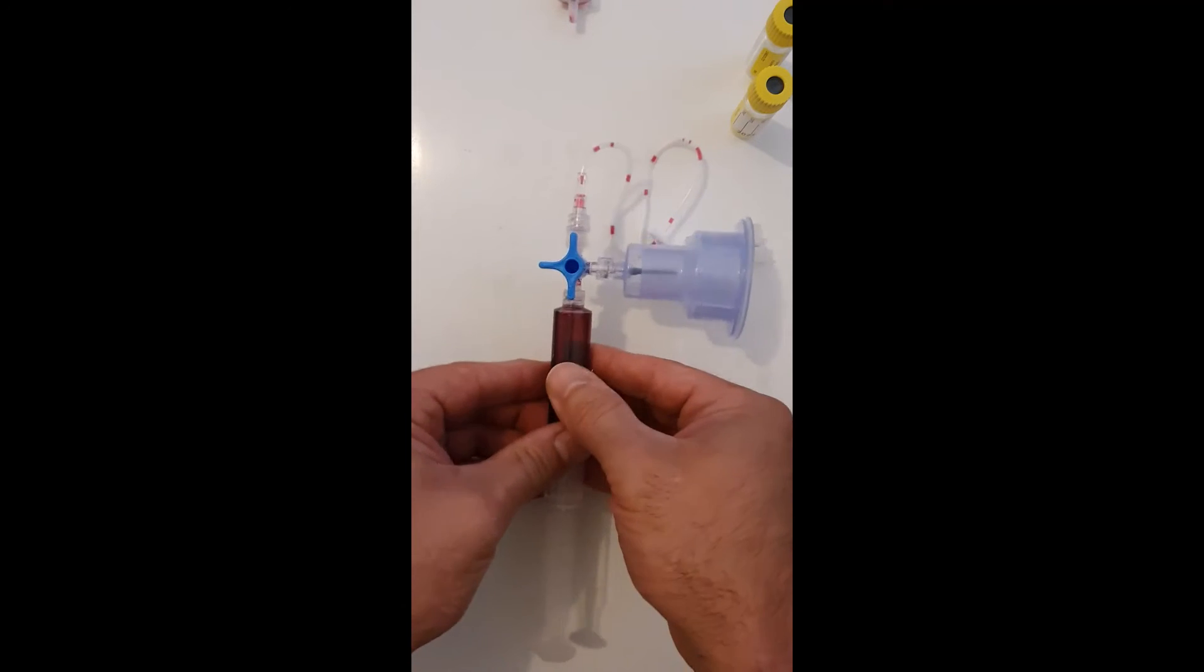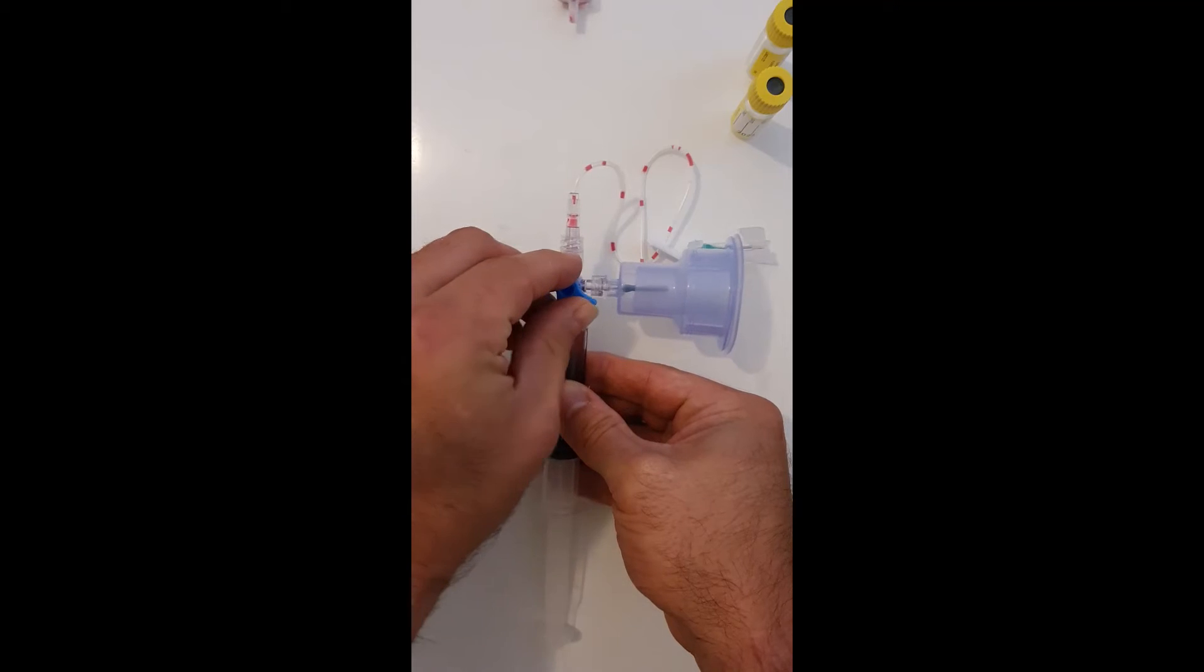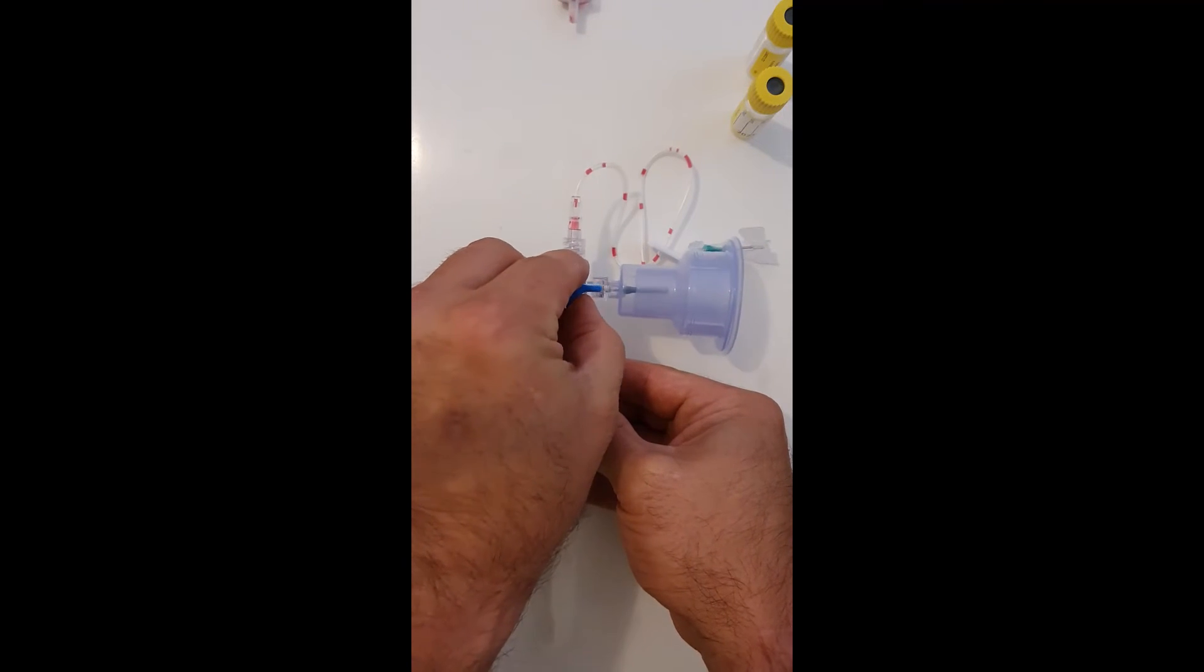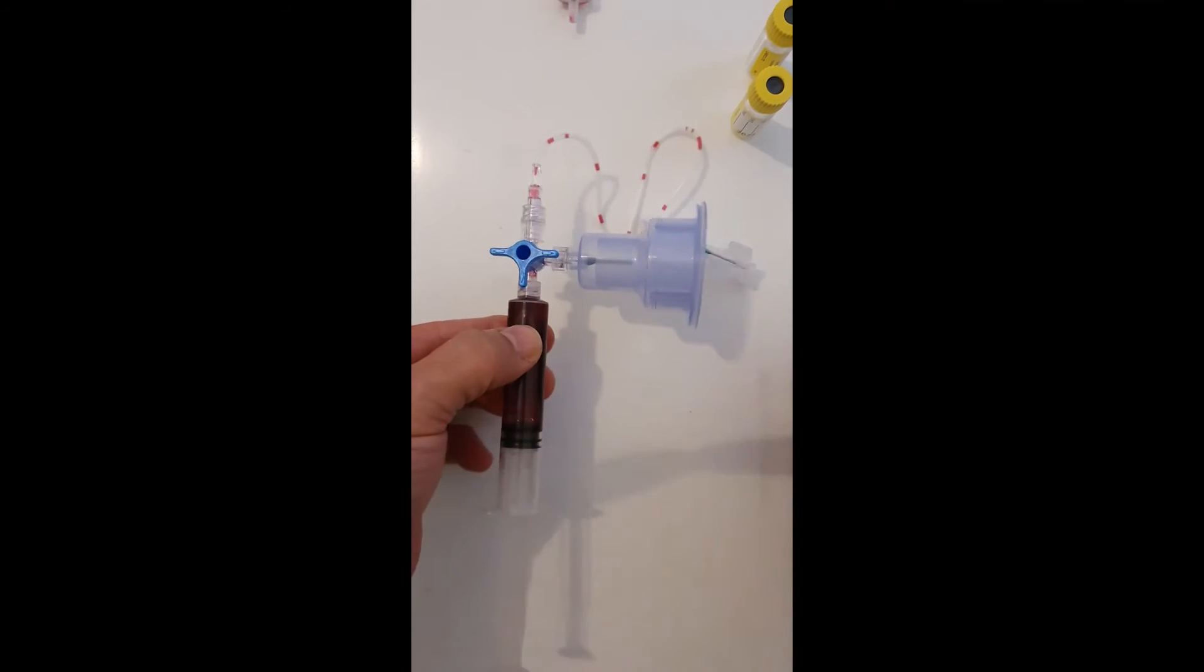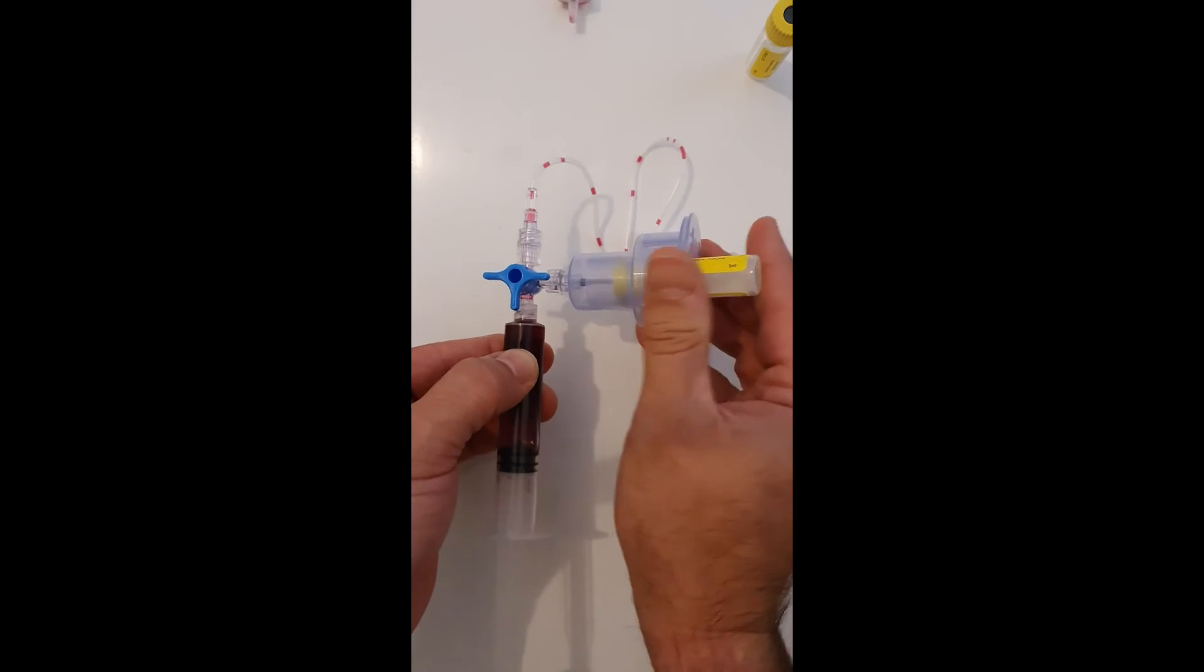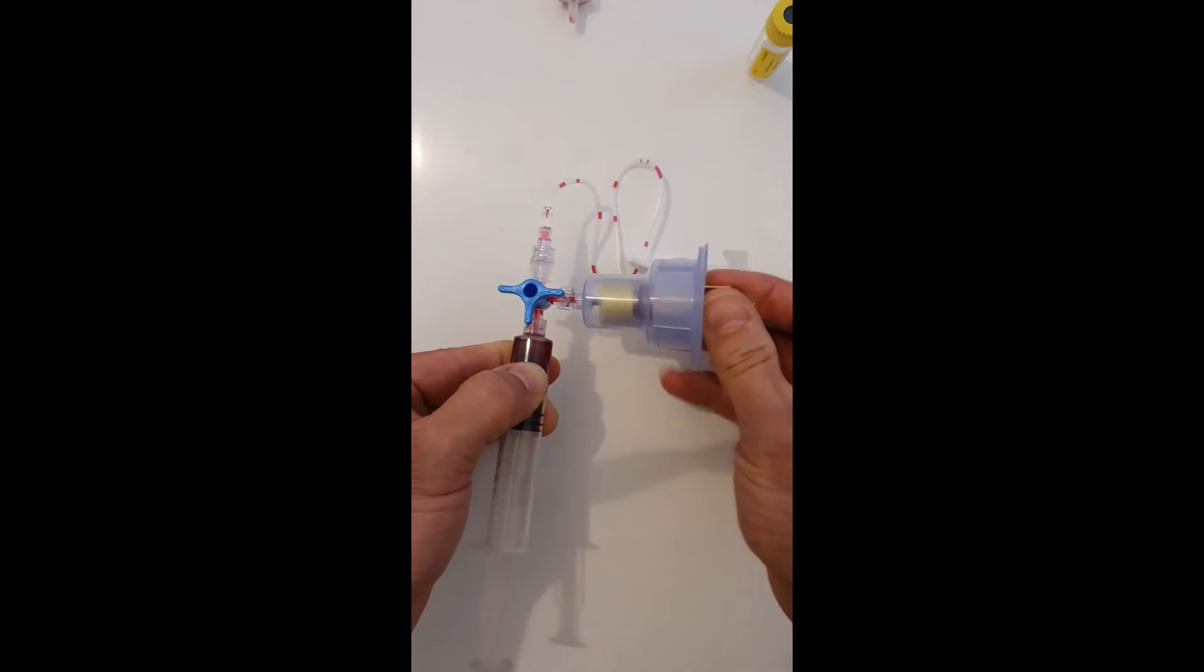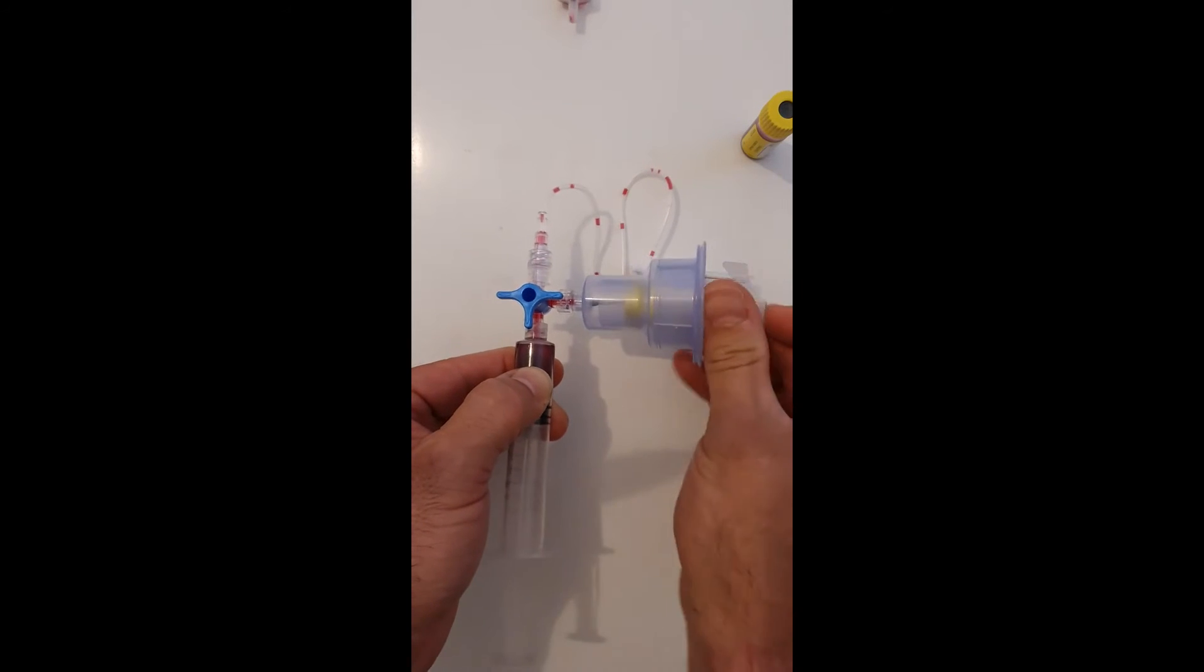Once you're in this position then, all we're going to do is do a quarter turn to the right on the key to ensure that the flow goes in this direction. We place on the vacutainer, the tube fills and the second container goes on.